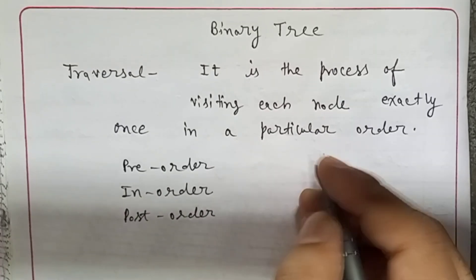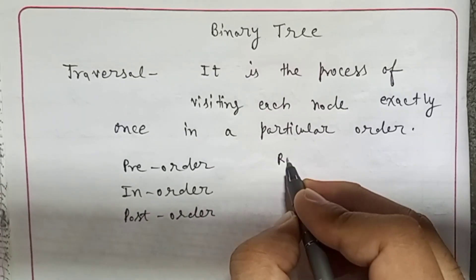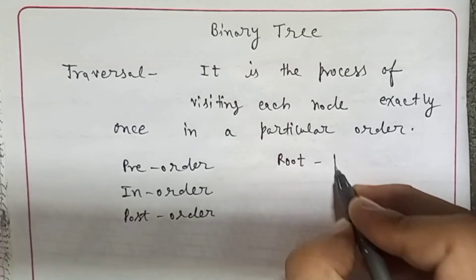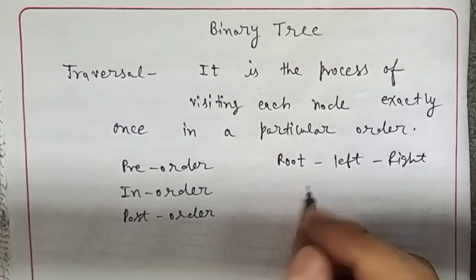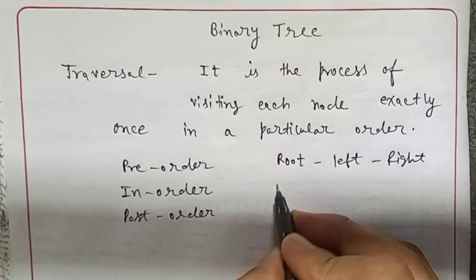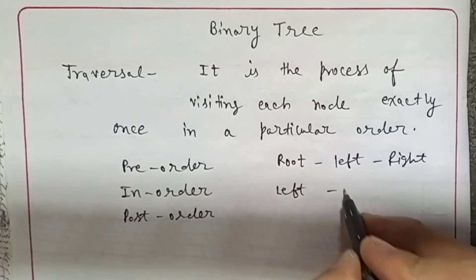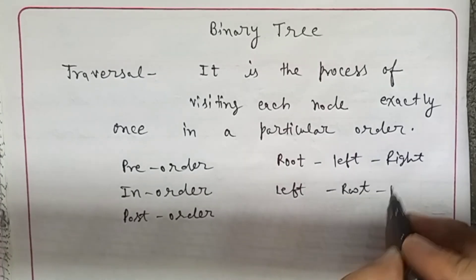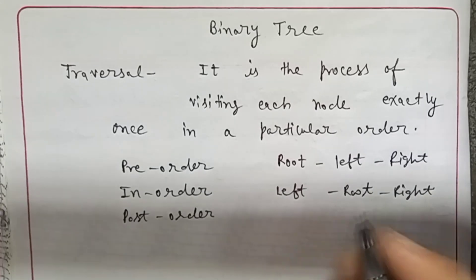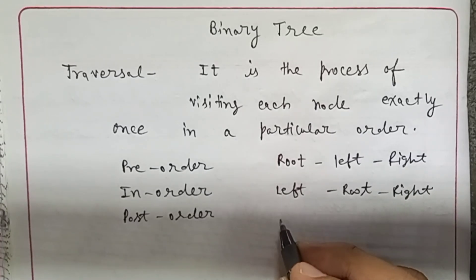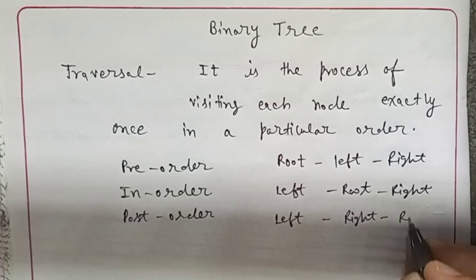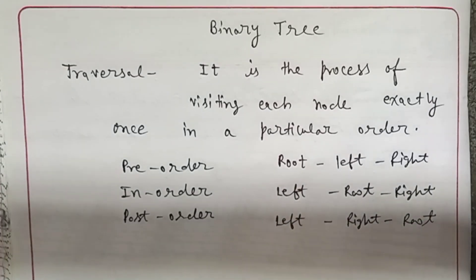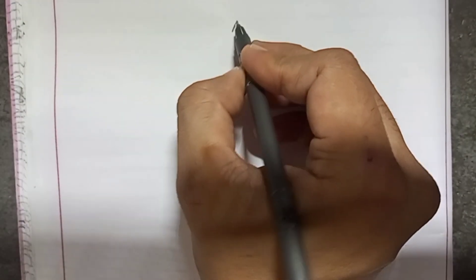In pre-order, we go from root, then left, and then right. In in-order, we go left, then root, and then right. In post-order, we go left, then right, and then root. This is the process of traversal. Let's create the tree.